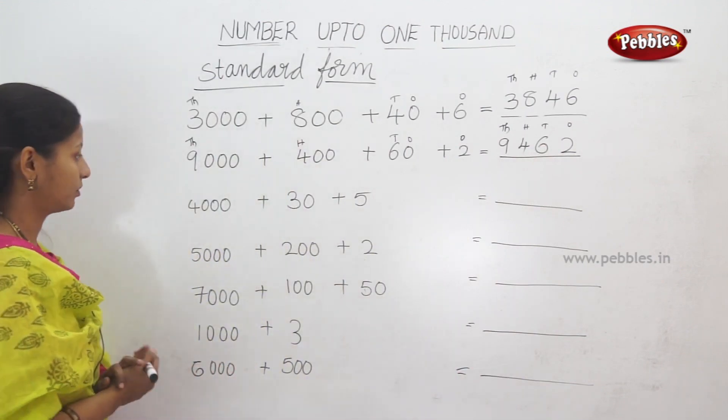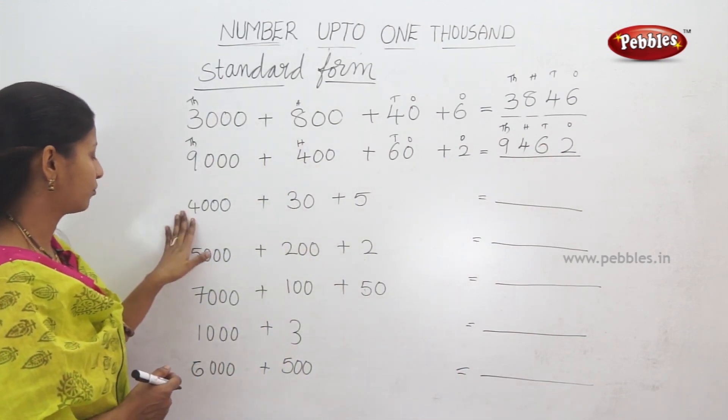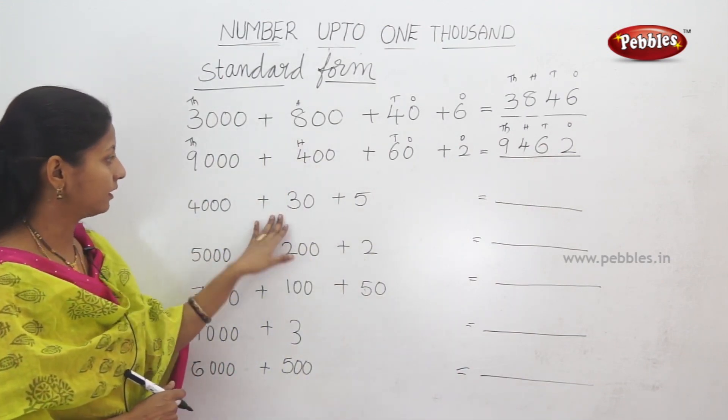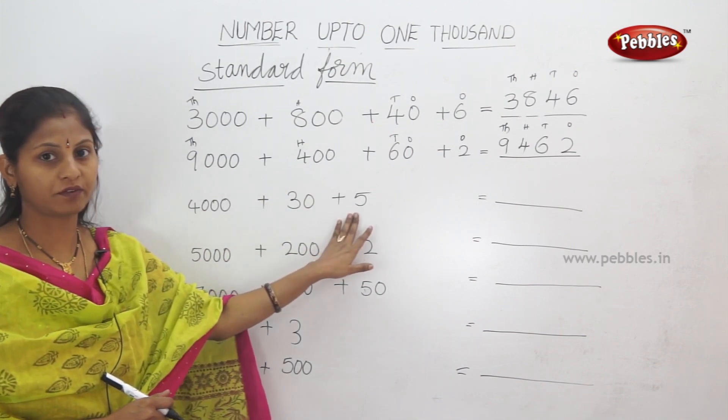Here is another example: 4000 plus 30 plus 5.